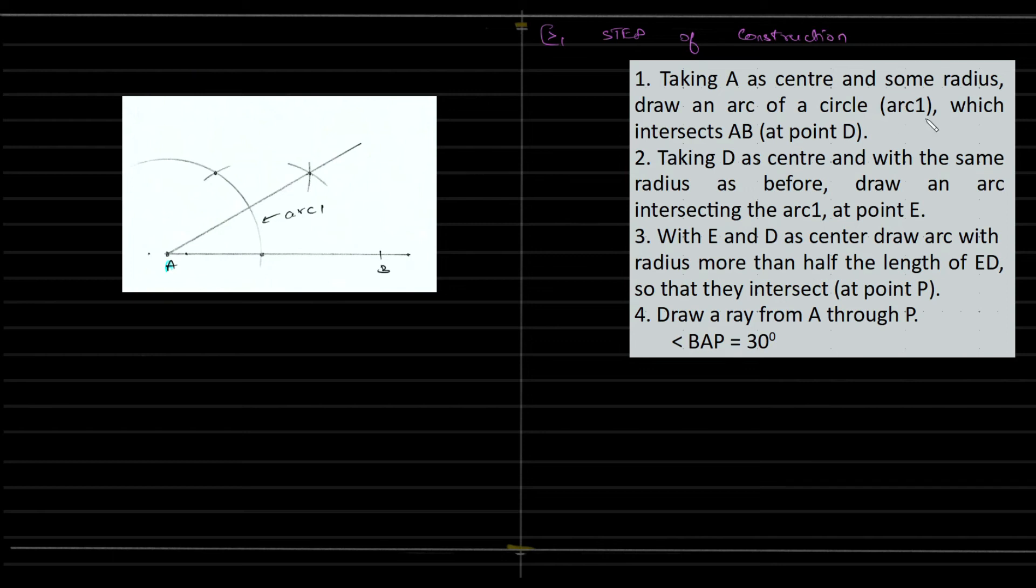That's an arc which intersects AB at D. Taking D as center with the same radius—this is very important that we need to stick to the same radius—as before, draw an arc intersecting the arc one at E. So that will be your E.